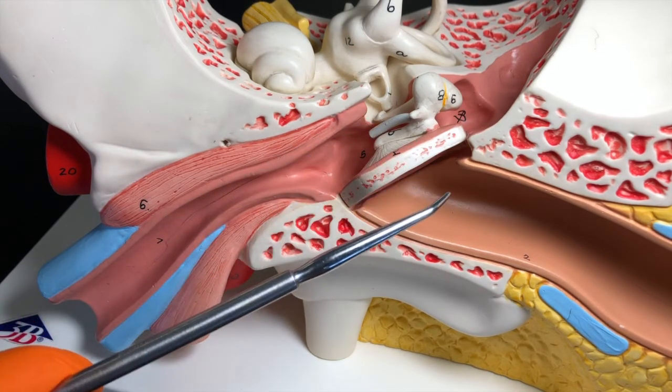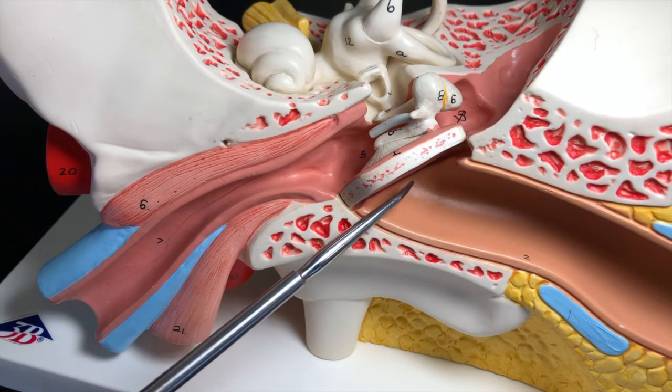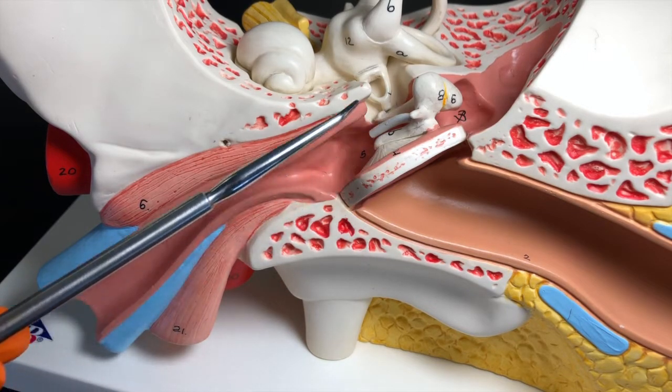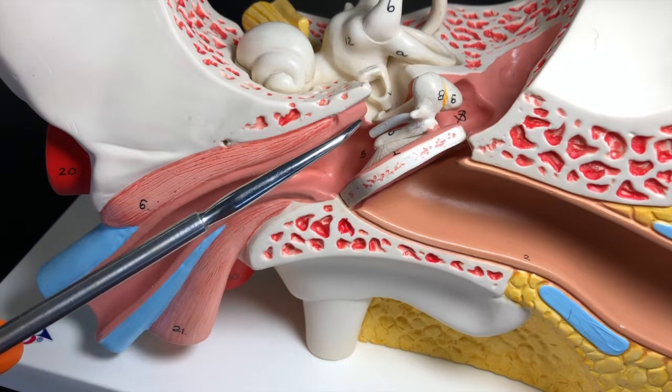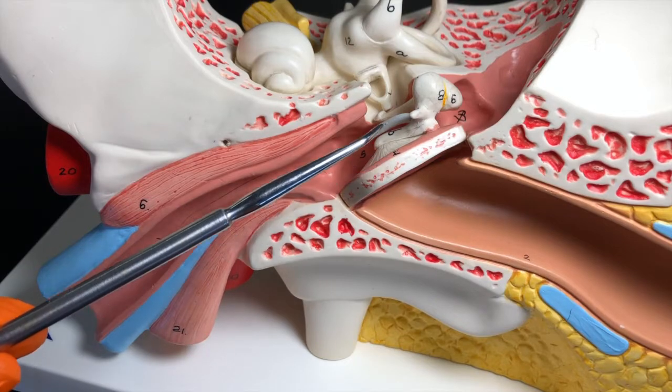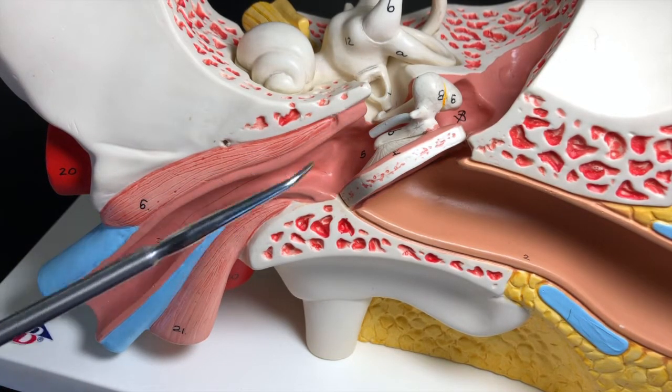So if we ever have kind of pressure built up here, what do you normally do? You yawn or you chew gum, and what that does is that opens up this tube, and that again connects to the nasopharynx and allows that pressure to equalize.